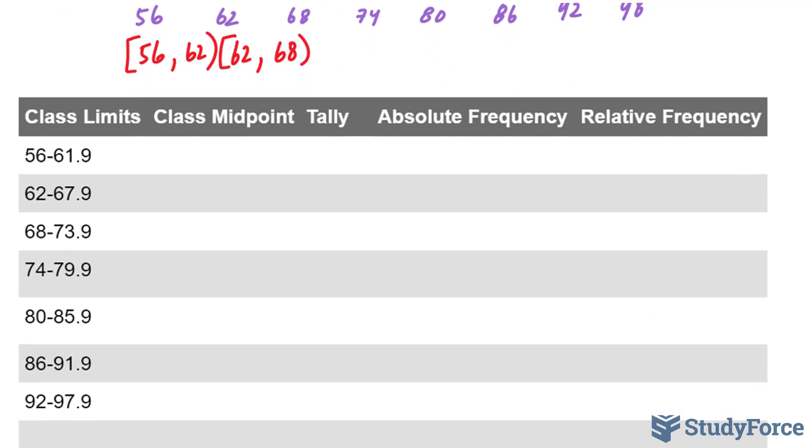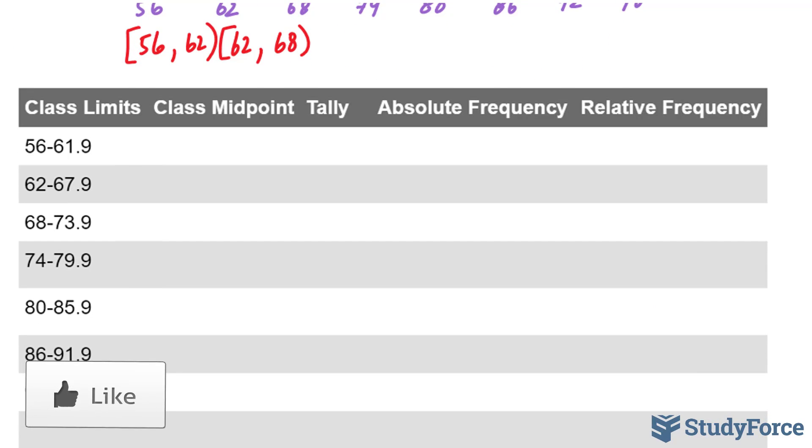That being said, let's go ahead and find the class midpoint. For the first class, the midpoint would be 59. The next class will be 65. The next class will be 71, 77, 83, 89, and finally 95.